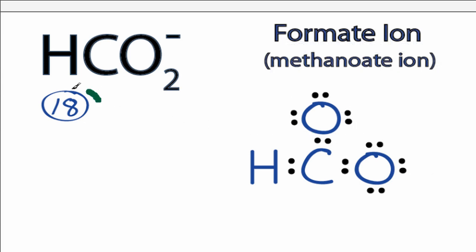So at this point we've used all 18 valence electrons. The oxygens have 8 valence electrons, so their octets are full, and the hydrogen has 2 valence electrons, so it has a full outer shell as well.